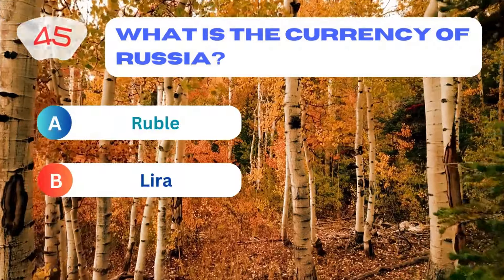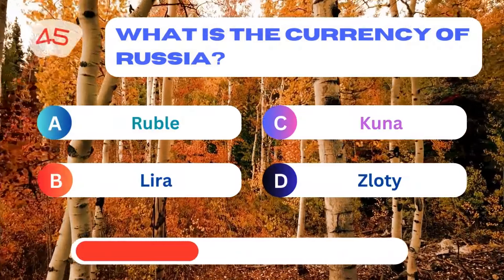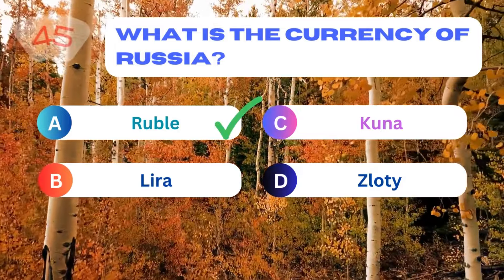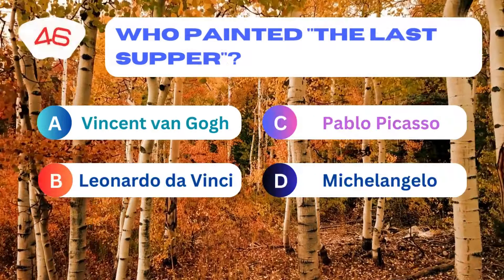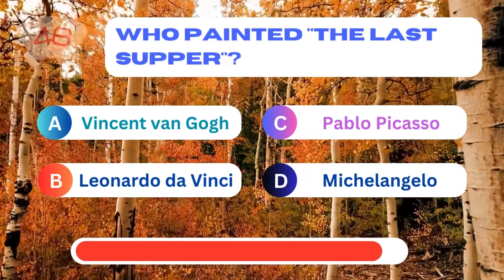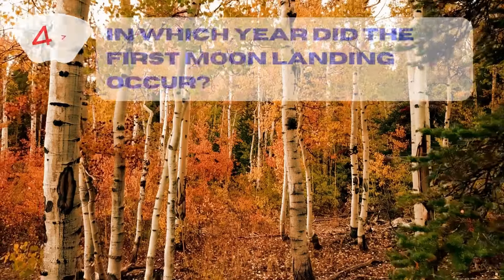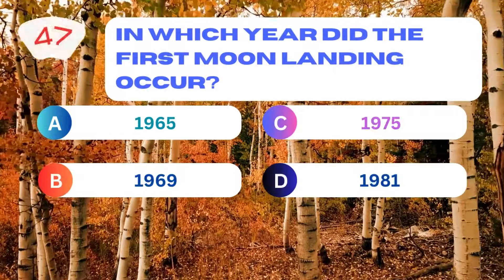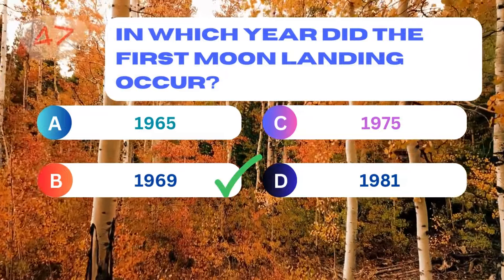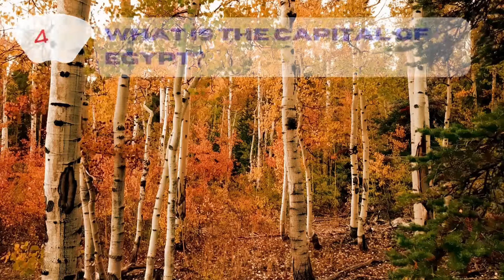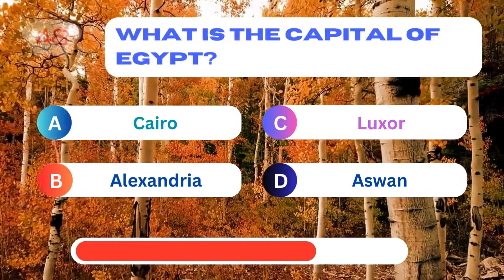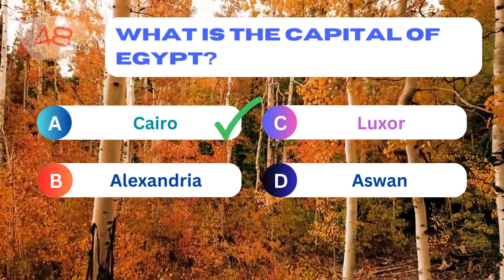What is the currency of Russia? Ruble. Who painted The Last Supper? Leonardo da Vinci. In which year did the first moon landing occur? 1969. What is the capital of Egypt? Cairo.